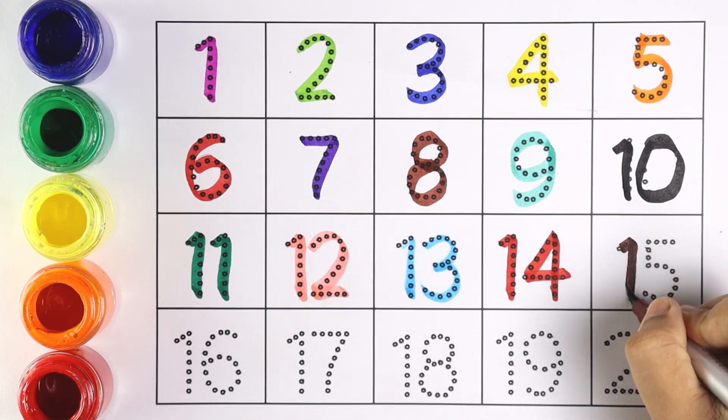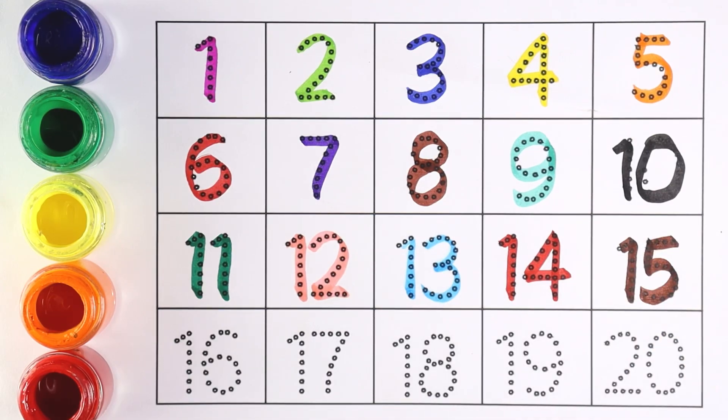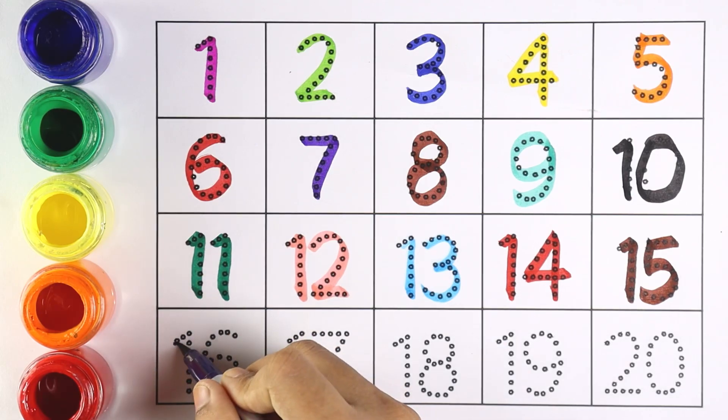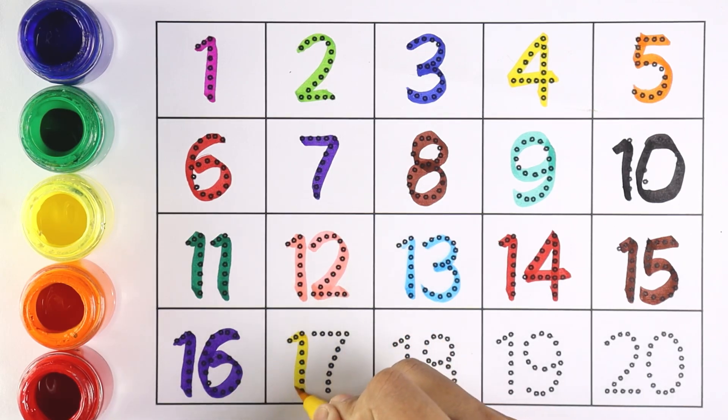Number 15. 1 and 5 makes the number 15. Number 16. 1 and 6 makes the number 16. Number 17.